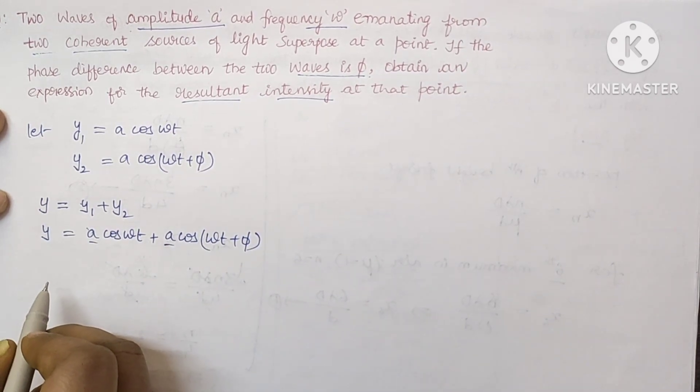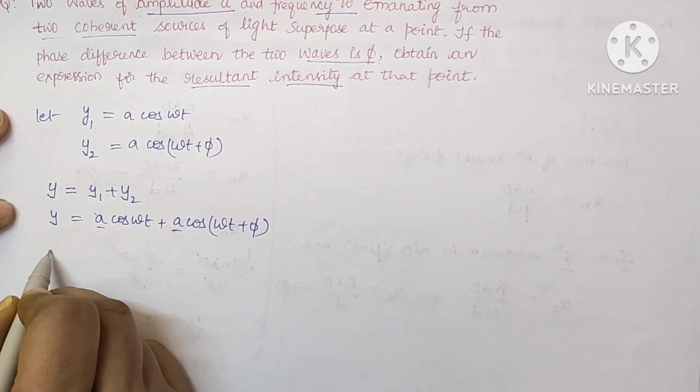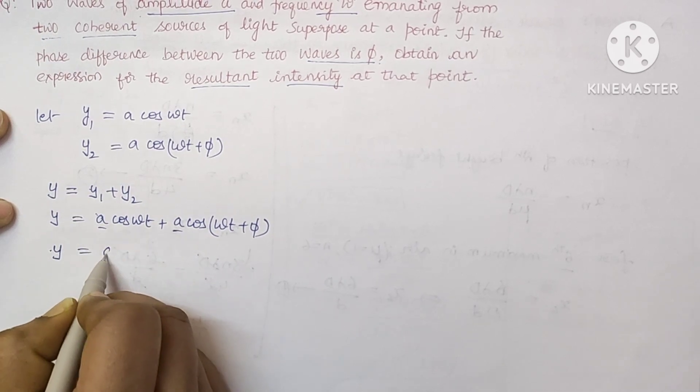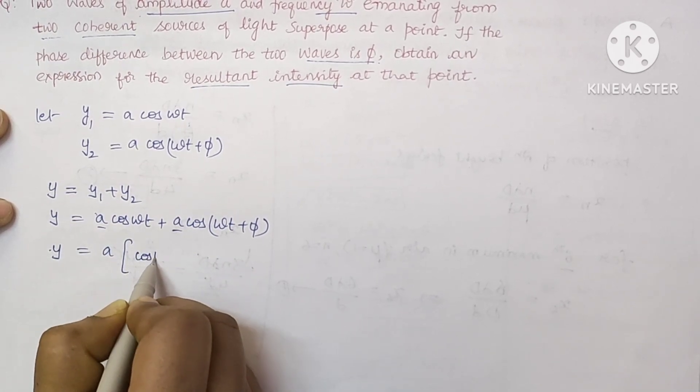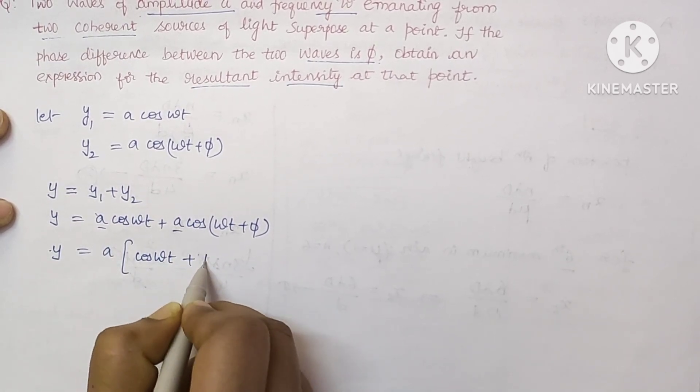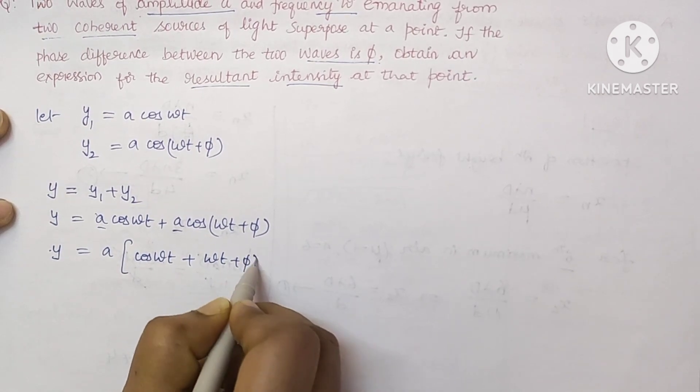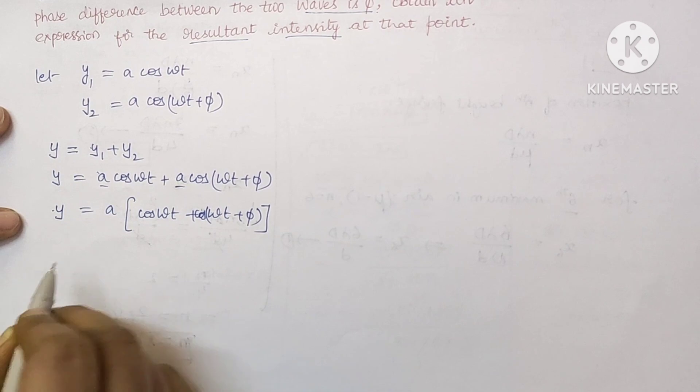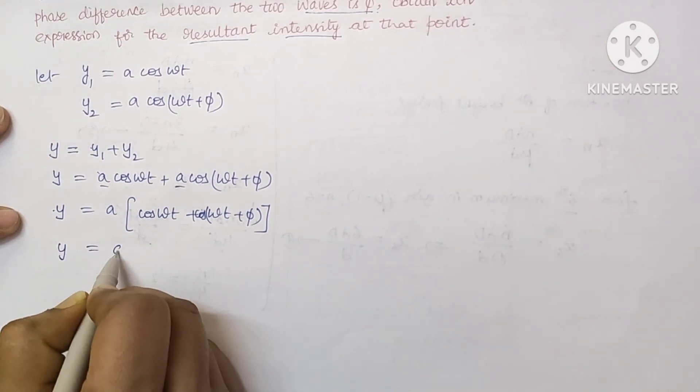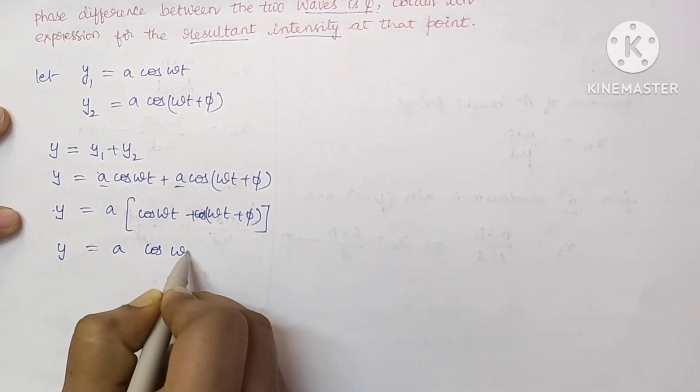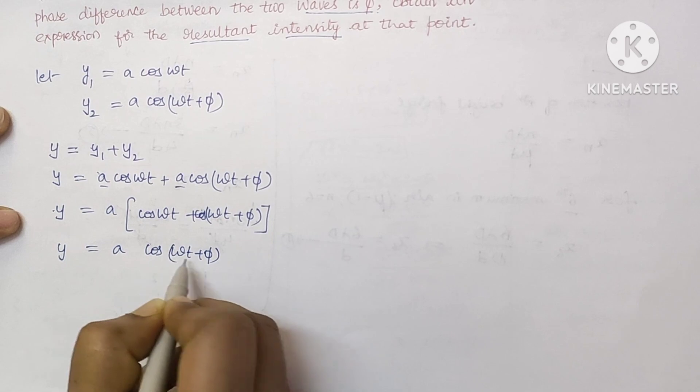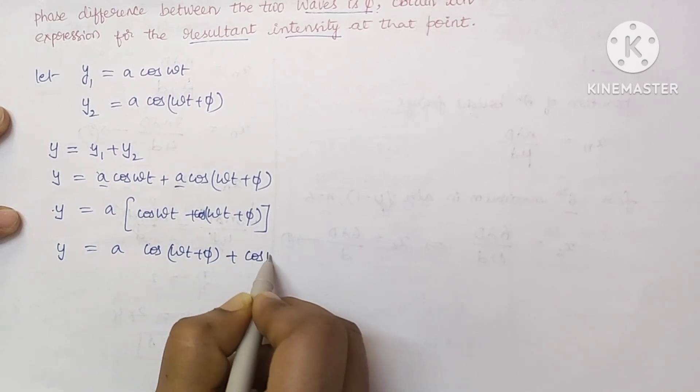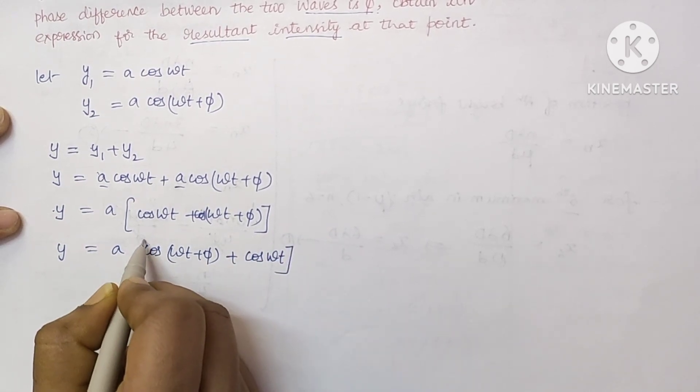So here and here A is common. Here A is nothing but amplitude. So y equals A into cos omega t plus cos omega t plus phi. Now I am rewriting this equation: A times cos omega t plus cos omega t plus phi plus cos omega t.